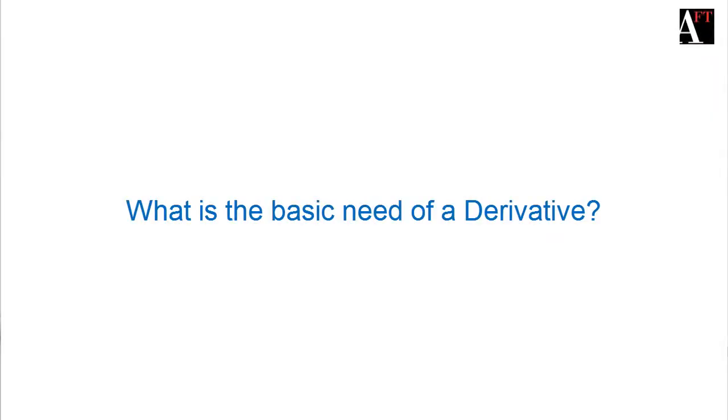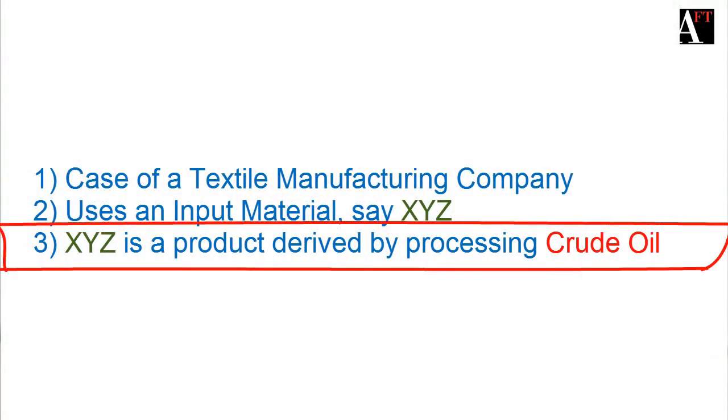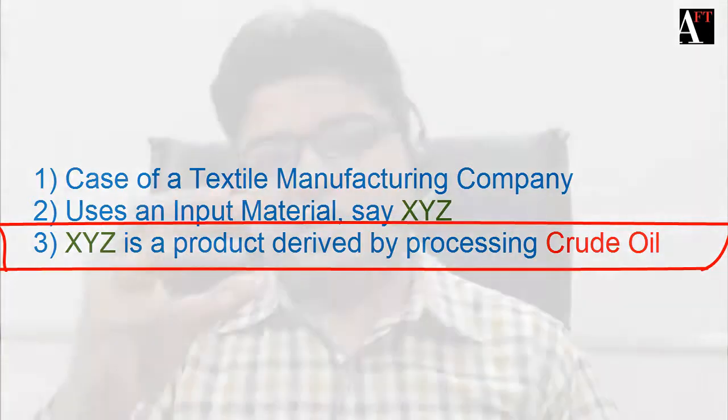What is the basic need of a derivative? Take the example of a textile manufacturer who is manufacturing a specific type of material. The key input is a derivative of crude oil, and crude oil prices are fluctuating in the global market.